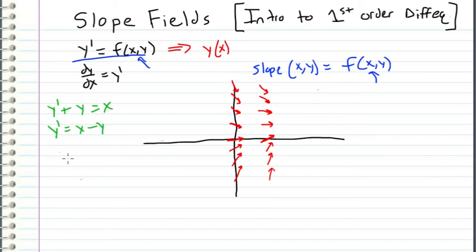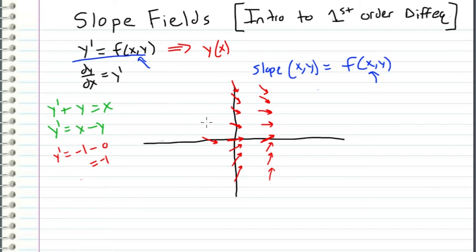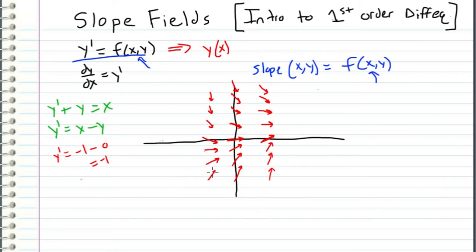When x equals negative 1 and y equals 0, y prime equals negative 1 minus 0, which is negative 1. At the point (−1, 0) we get a slope of negative 1, and going up in the y direction the slope becomes more negative — negative 2, negative 3, and keeps getting more negative. Going down in the y direction, the slope becomes more positive: 0, then 1, then 2, and so on.